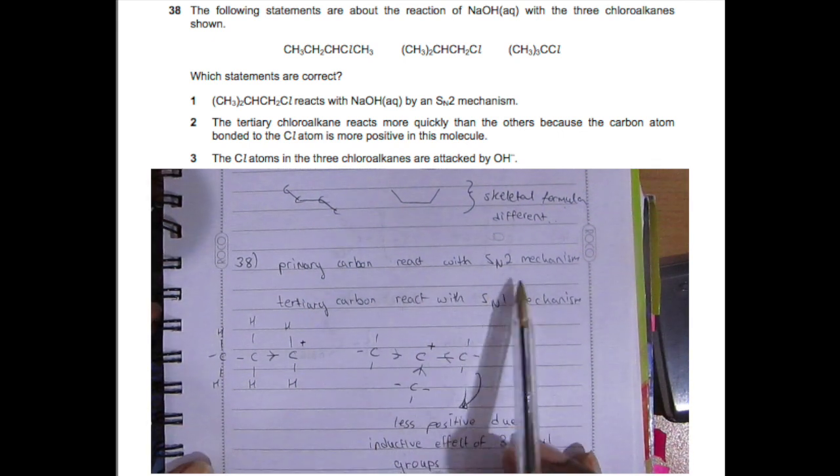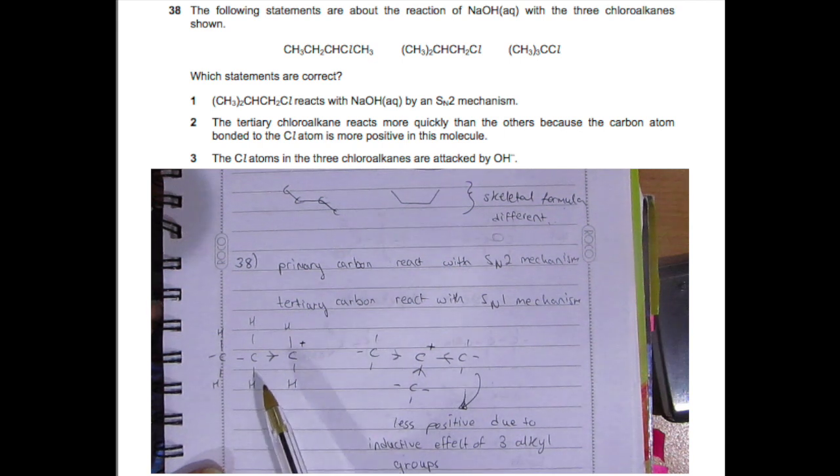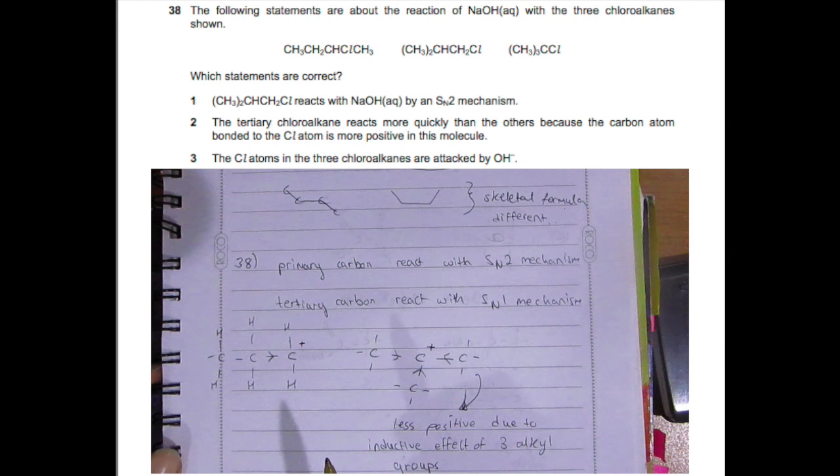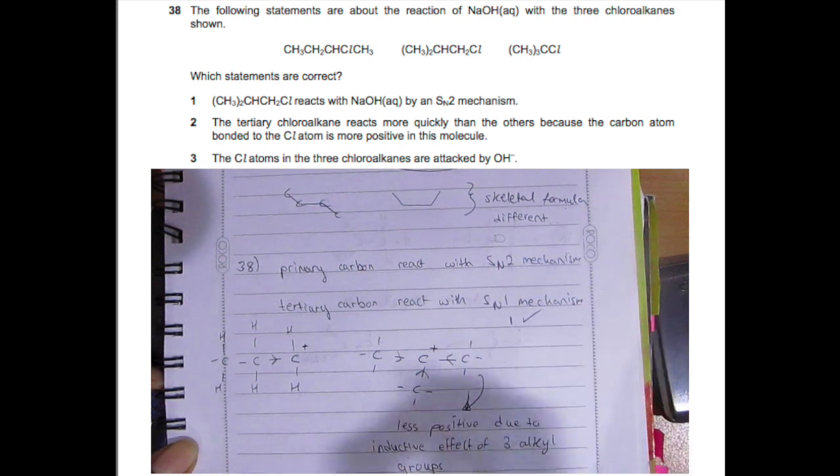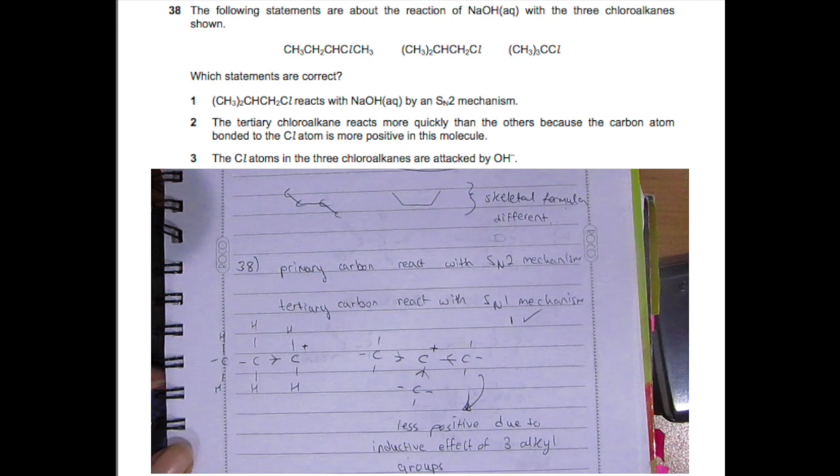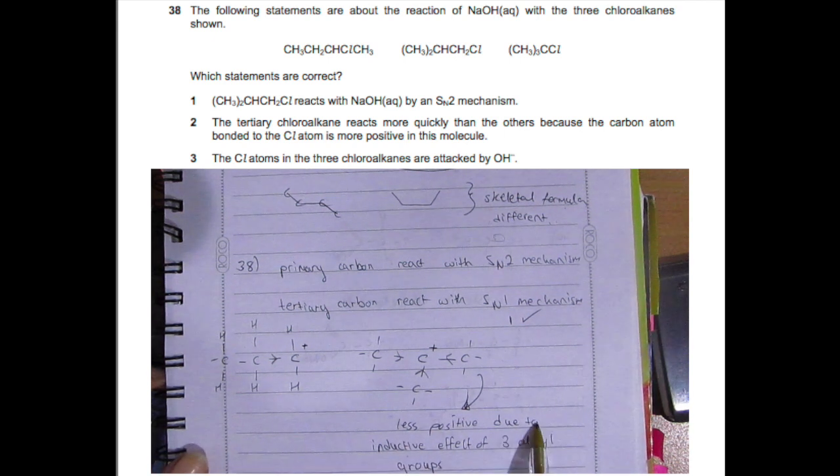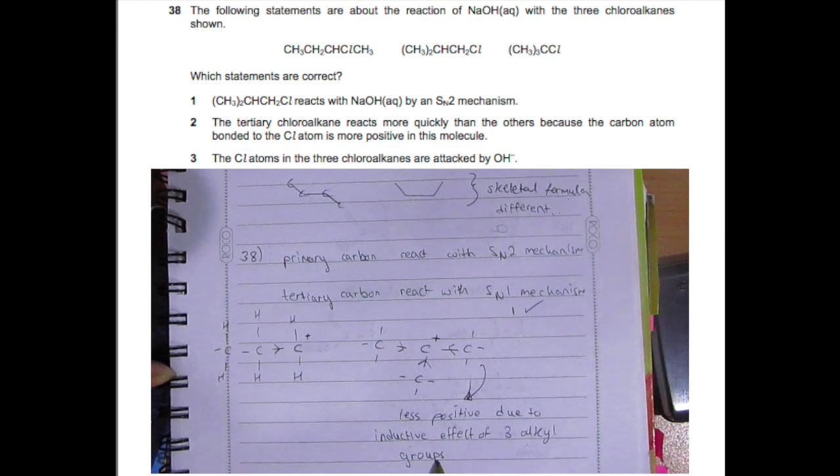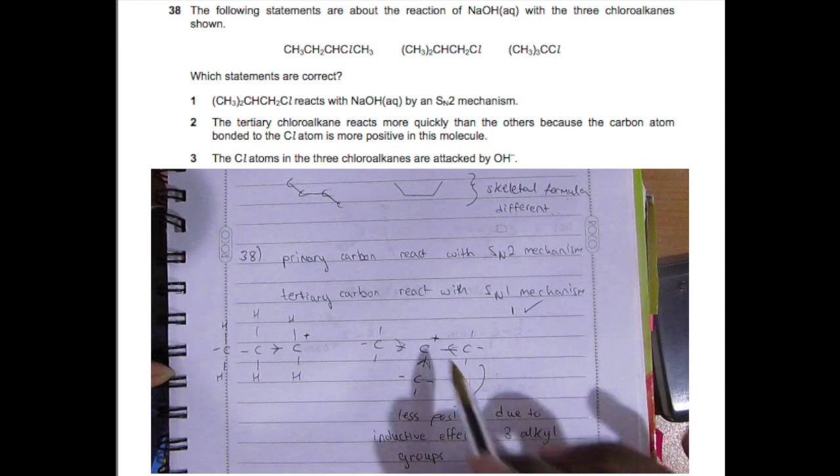Question 38: The following statements are about the reaction of sodium hydroxide with three chloroalkanes. This one reacts with NaOH by an SN2 mechanism. Primary haloalkanes or primary carbons react with an SN2 mechanism, and tertiary carbons react with an SN1 mechanism. You check the chlorine and see it's connected to only one carbon, so it's a primary haloalkane and has to react with an SN2 mechanism. Option one is correct.